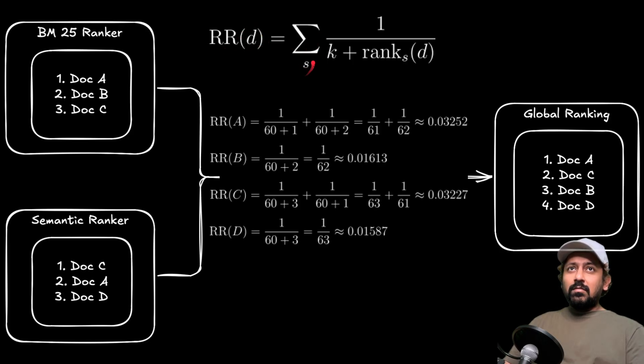So we can easily take a look at an example and it becomes much much clearer here. So if the reciprocal rank of A, if I have to calculate that, let's say k is 60. So for the BM25 ranker this number becomes 1 over 60 plus 1, so 1 over 61.